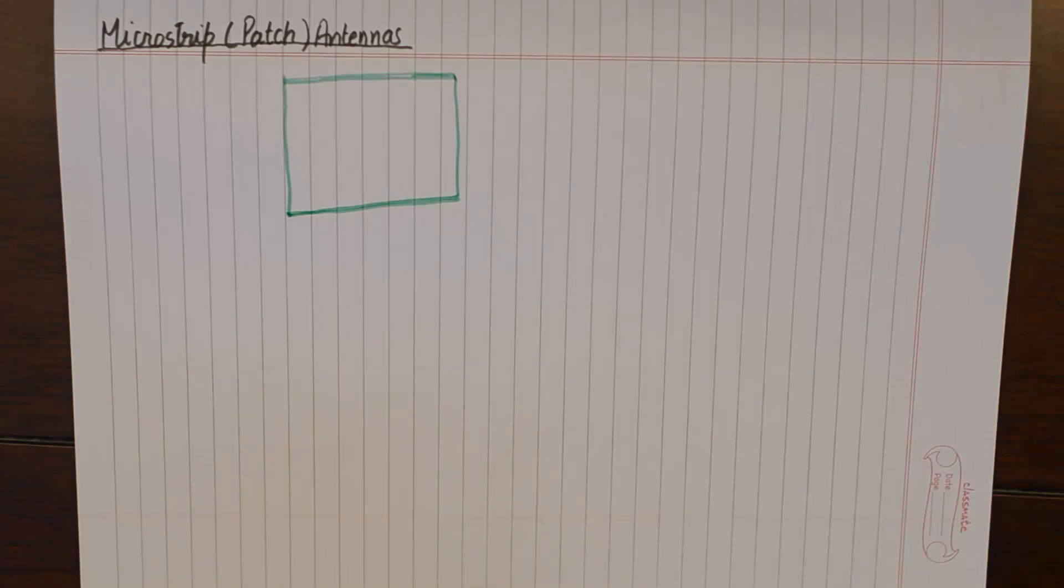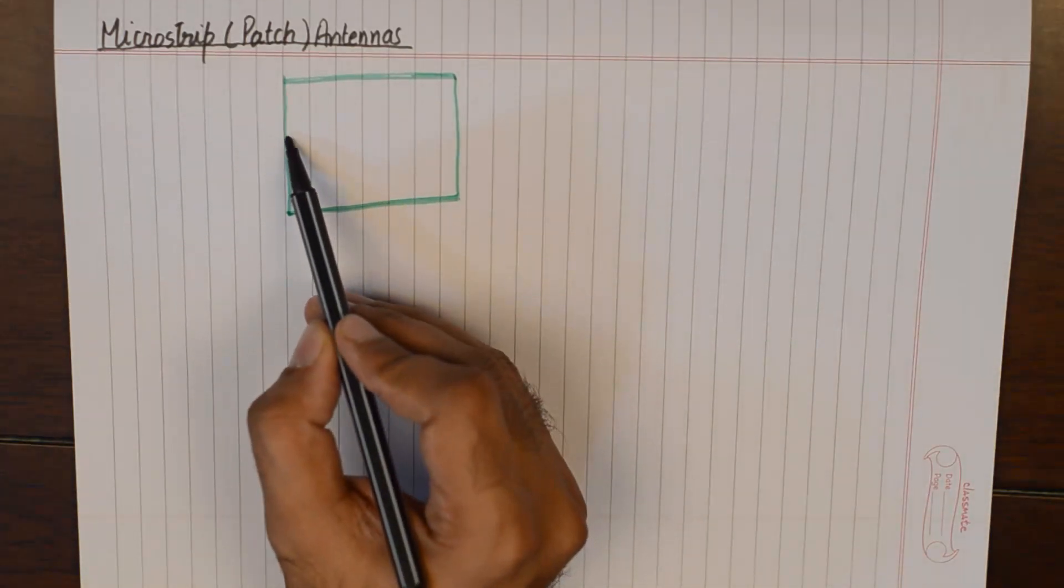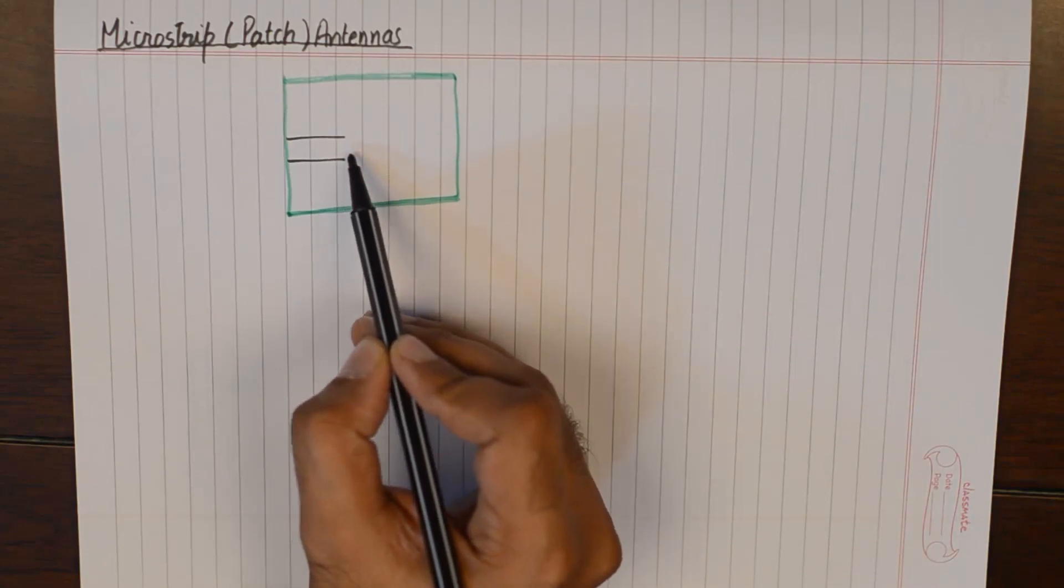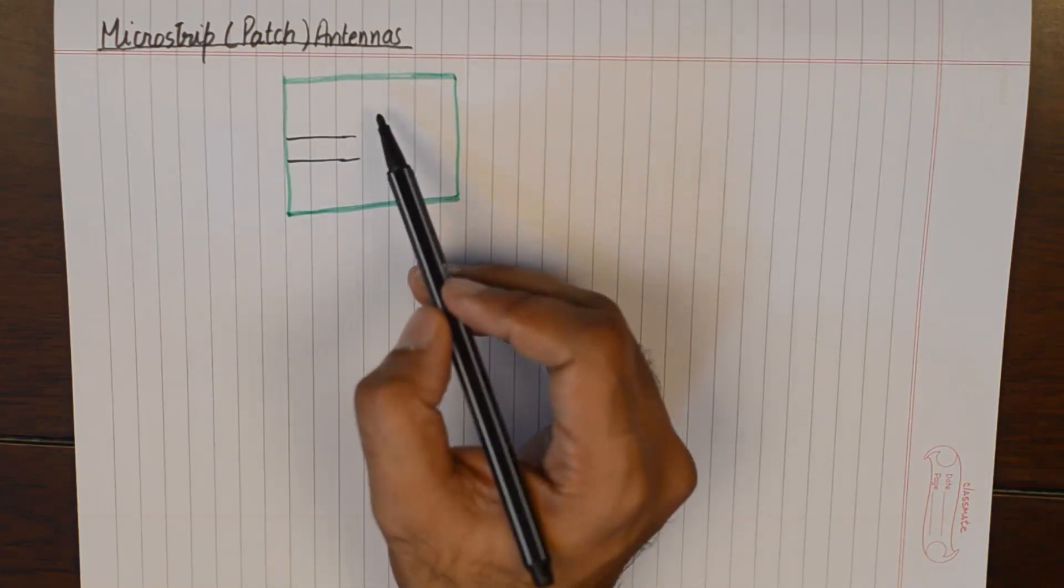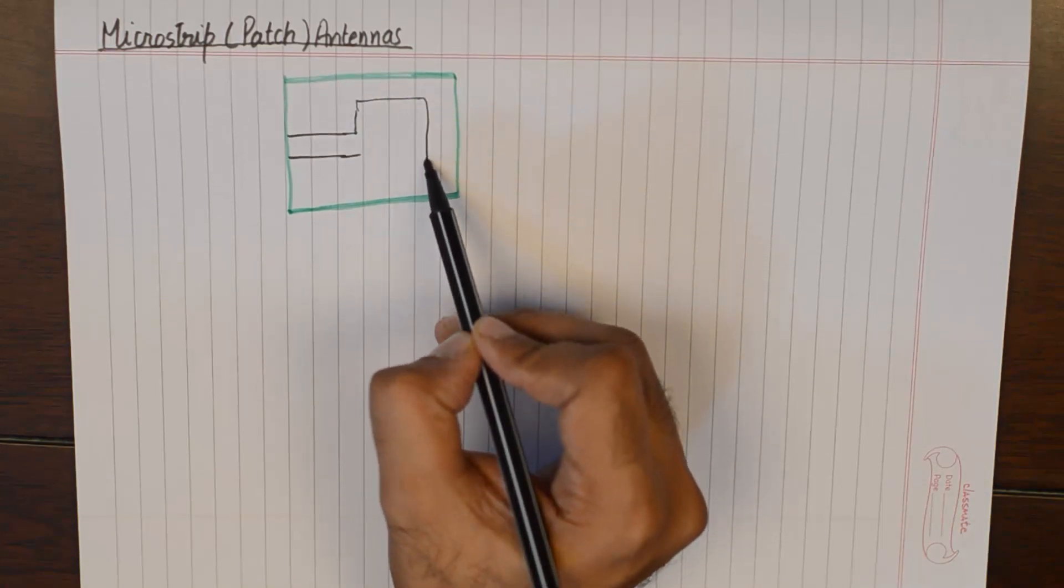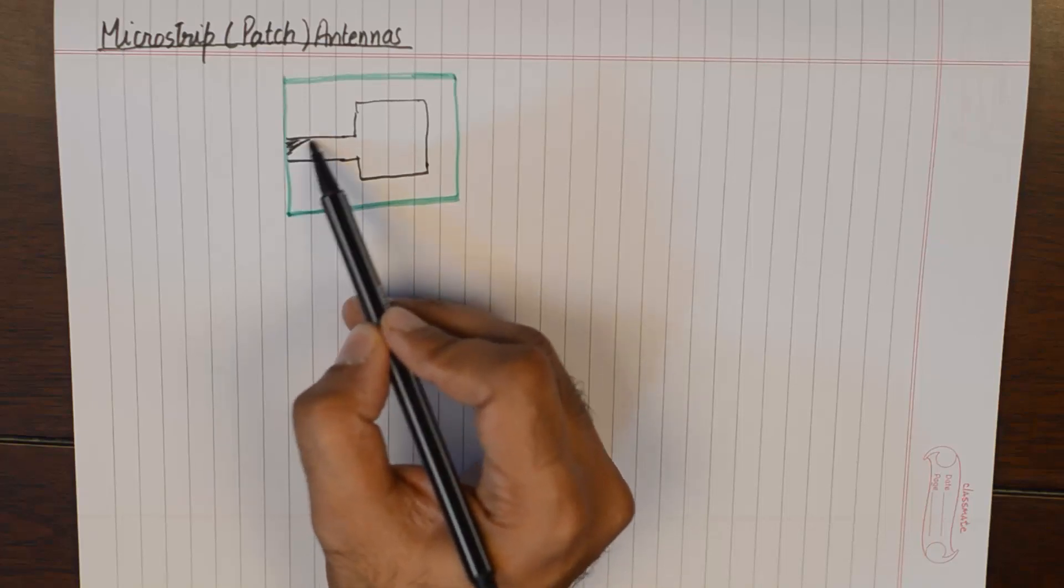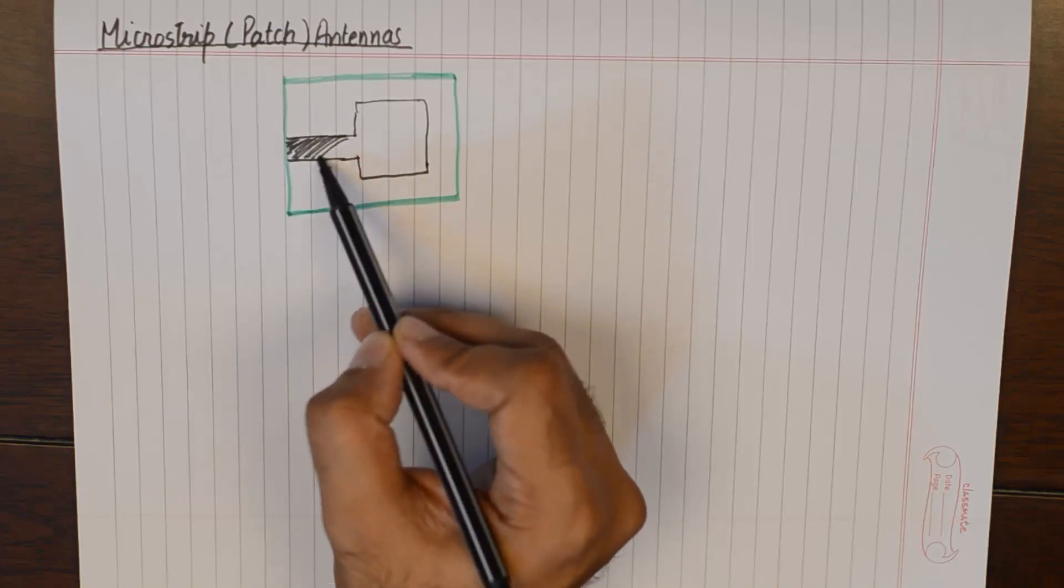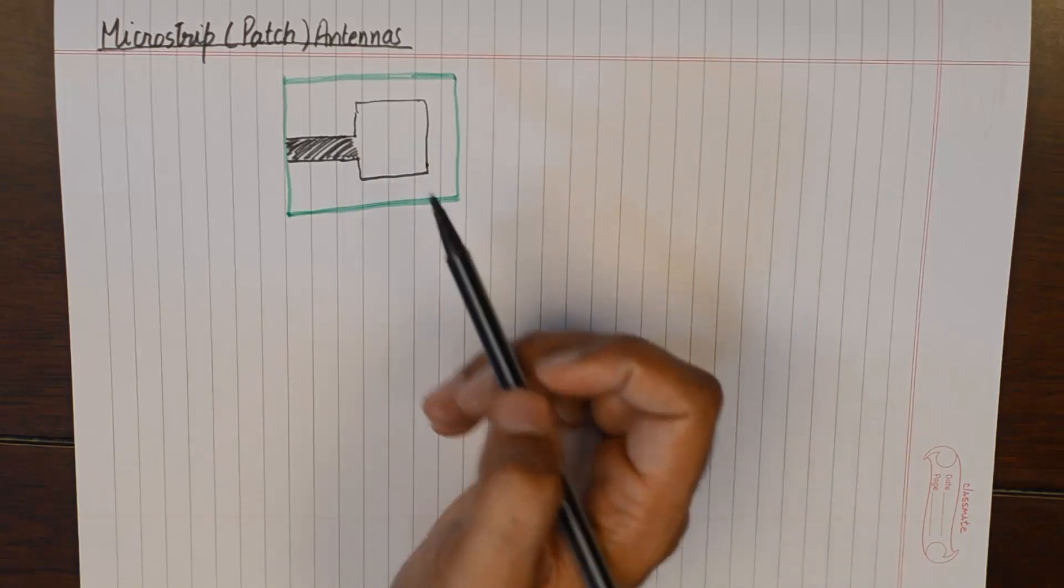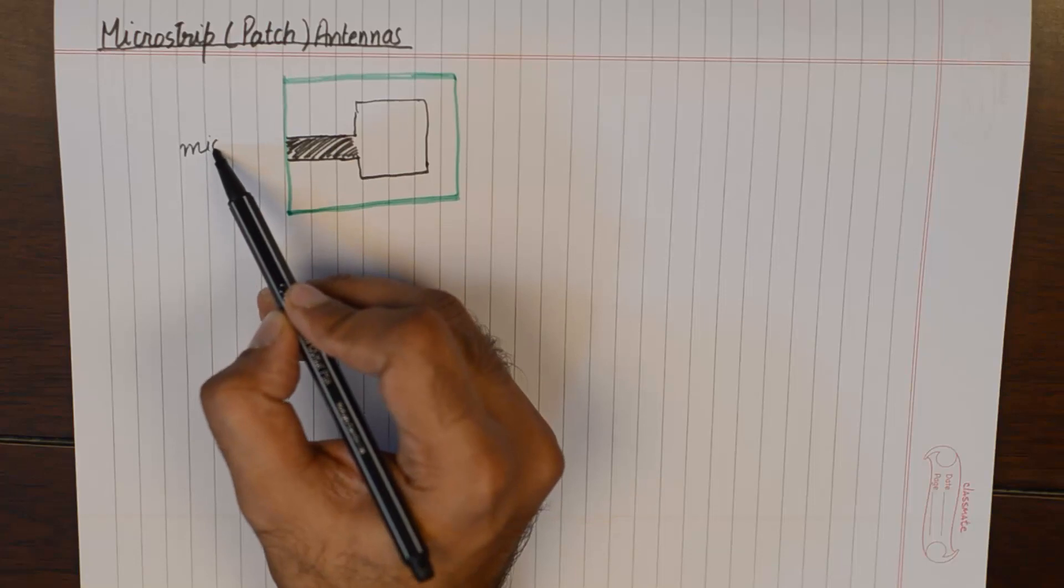On top of this we deposit a metallic layer that would represent an antenna. If I was to draw the top view of a patch antenna or microstrip antenna, I would make it something like this, where this deposit of metal on the substrate of PCB is the microstrip transmission line.